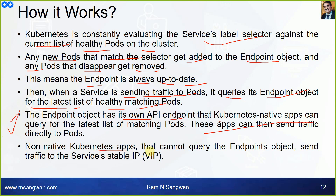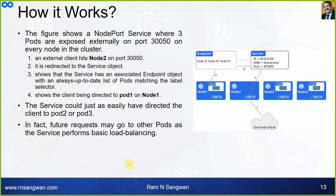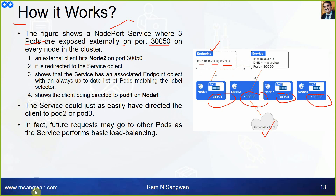When a service is sending traffic to pods, it queries the endpoint object for the latest list of healthy matching pods. The endpoint object has its own API endpoint that Kubernetes-native apps can query directly. Non-native Kubernetes apps that cannot query the endpoint object send traffic to the service's stable virtual IP. This figure shows the NodePort service where three pods are exposed externally on port 3050 — external clients access port 3050 on any node, hence the name NodePort.